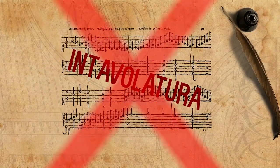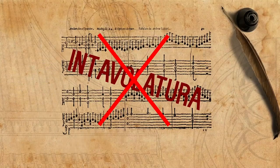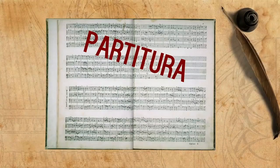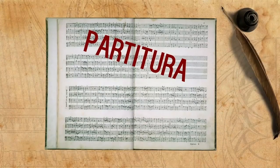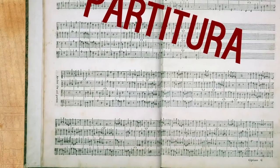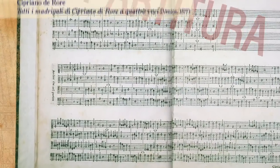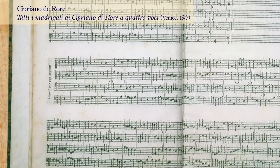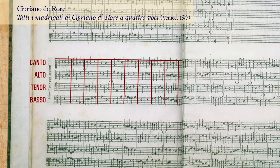They had to use the partitura. Here again we see Ancor che col partire in one of the earliest printed partiture. The partitura is almost like a modern open score, where the parts are on top of one another and locked within bar lines.